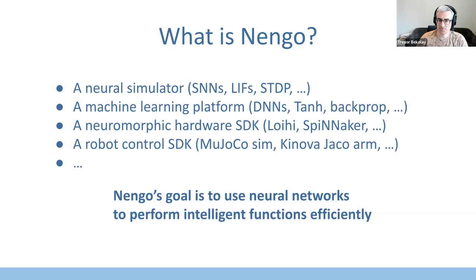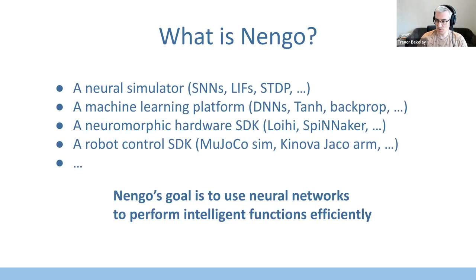Nengo has also been used as a machine learning platform — lots of demos using traditional deep neural networks, non-spiking neural models, and learning with backpropagation. Nengo has also been used to interface with different types of neuromorphic hardware. We'll talk about the Loihi backend, the SpiNNaker backend, and several others as a way to quickly get access to certain pieces of hardware.